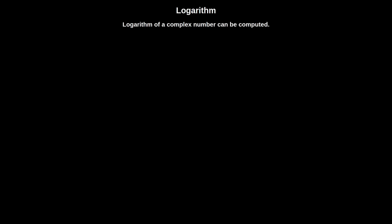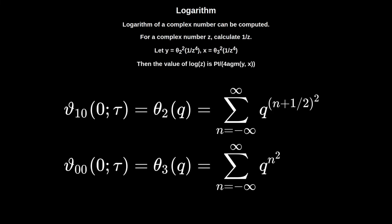So, logarithms are one of the applications of the arithmetic geometric mean. And this is how you do it. We take the reciprocal of the number, take it to the fourth power, and use the theta functions. We let x equals theta 3 squared, and y equals theta 2 squared of the fourth power of the reciprocal. Then we just take the arithmetic geometric mean of y and x, and multiply by 4, and then pi divided by that is the logarithm.